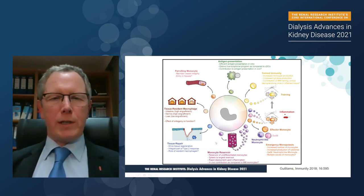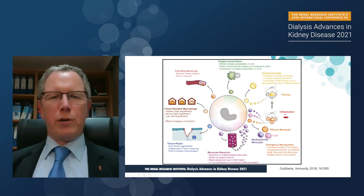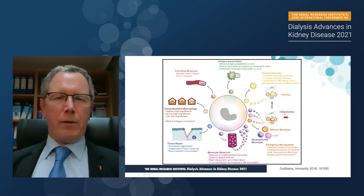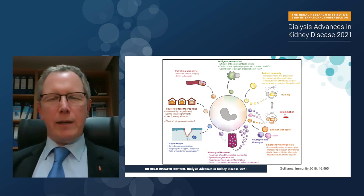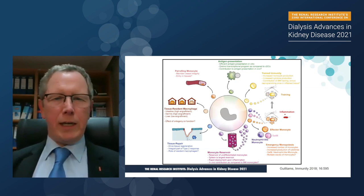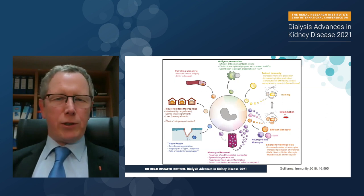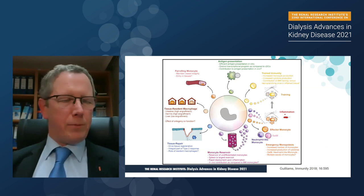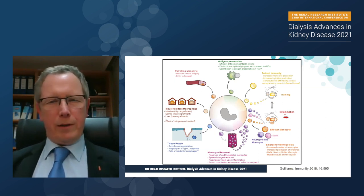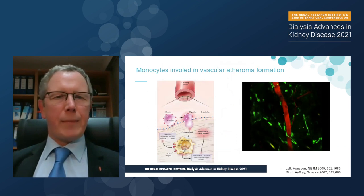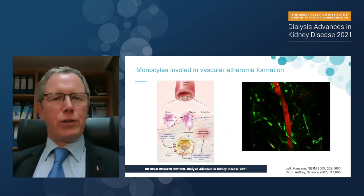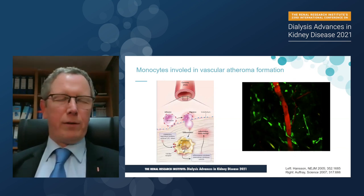When talking about monocytes, we also have to keep in mind that there is a large monocyte reservoir in the body. There are more cells in reservoir organs such as the spleen than in the circulation, and they can be liberated within a few minutes to replenish the circulation. So we have to think about cells that are not visible to our tests but that are present in the body. Now let's get to atheroma formation and the role of monocytes in that pathologic process.